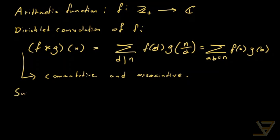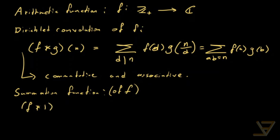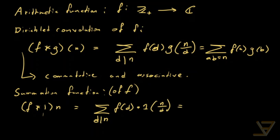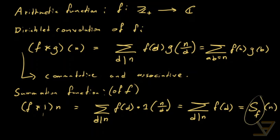Next comes the summation function. The summation function of f is f★1. And (f★1)(n), computed using the Dirichlet convolution — where by 1 I mean the function that always equals 1 — is the sum over all positive divisors d of n of f(d), and we call this S_f(n). So S_f is the summation function of f.